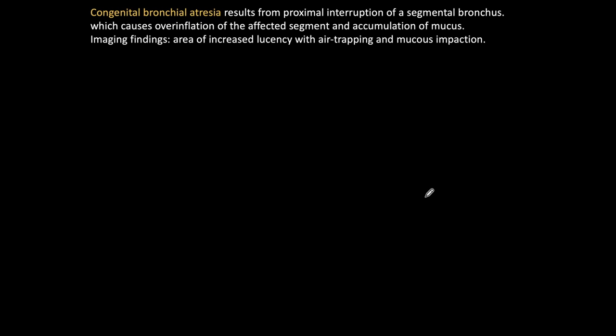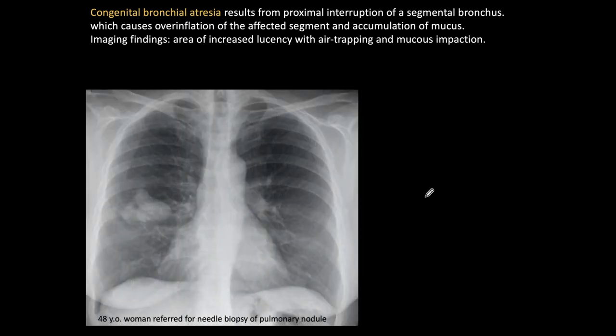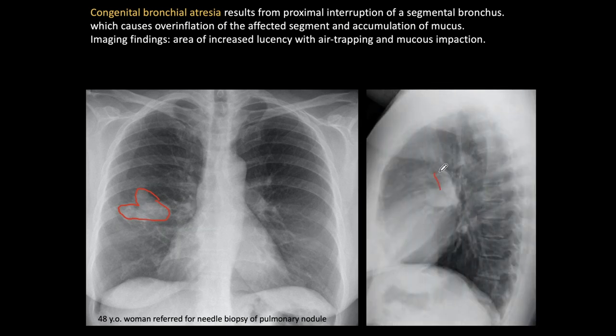The third condition I want to talk about is congenital bronchial atresia, which is a focal lesion of the lung occurring in a segmental bronchus that is absent. There is a proximal interruption and the bronchus is not present. This causes overinflation of the affected segment and accumulation of mucus. The imaging findings are an area of increased lucency with air trapping and mucus impaction. This is one case — a patient referred for needle biopsy of a pulmonary nodule. At first glance we can see this is not a nodule; the appearance is very typical of mucus impaction.